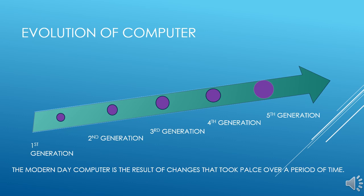The modern day computer is the result of changes that took place over a period of time. These changes can be studied in the form of five generations of computers: the first generation, second generation, third generation, fourth generation and fifth generation.